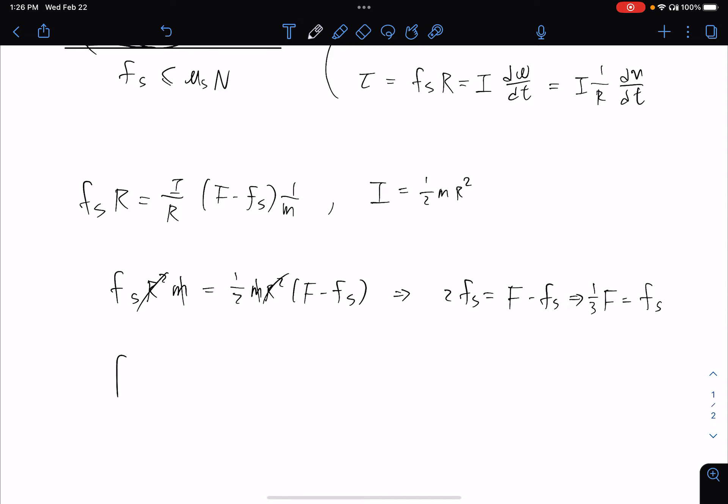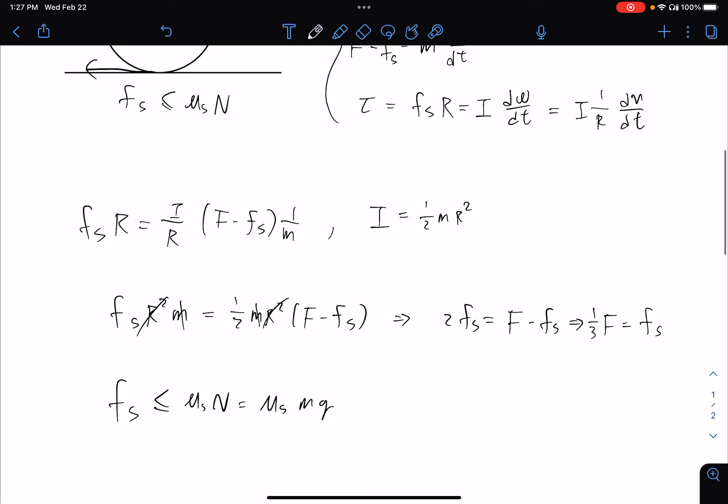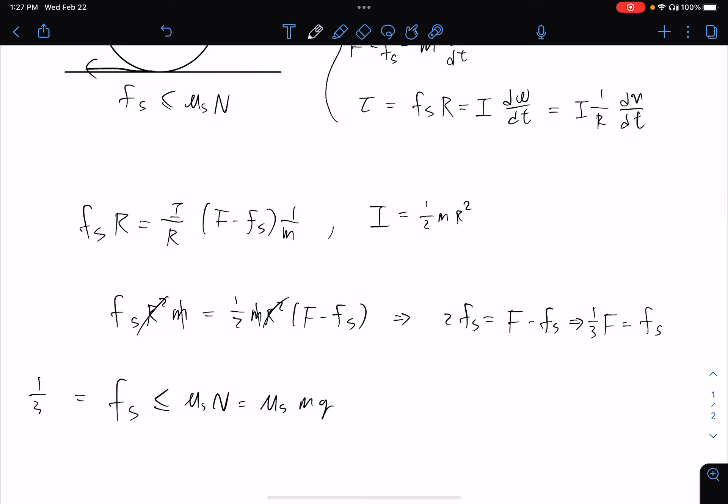So if the static friction needs to be smaller than μₛ times N, which is μₛ times the mass of the wheel times gravitational constant, and this equals one third F, then the force needs to be smaller or equal to 3μₛmg.